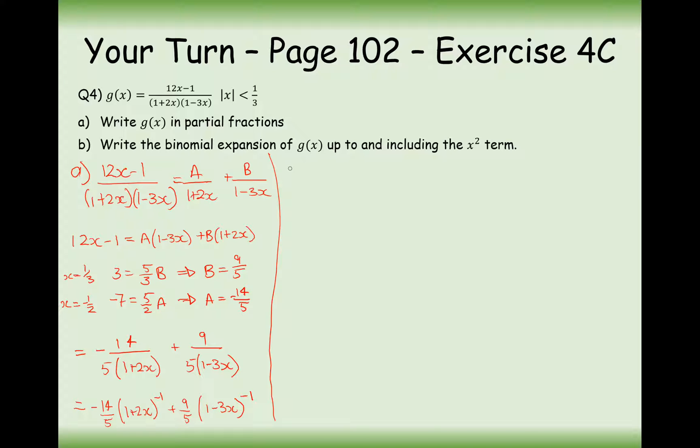But I am going to have to now do the binomial expansion of both of them. So let's first do minus 14 over 5 times 1 plus 2x to the power of minus 1. So substituting them in, I'll just leave the minus 14 over 5 at the front for now. I won't include that yet.